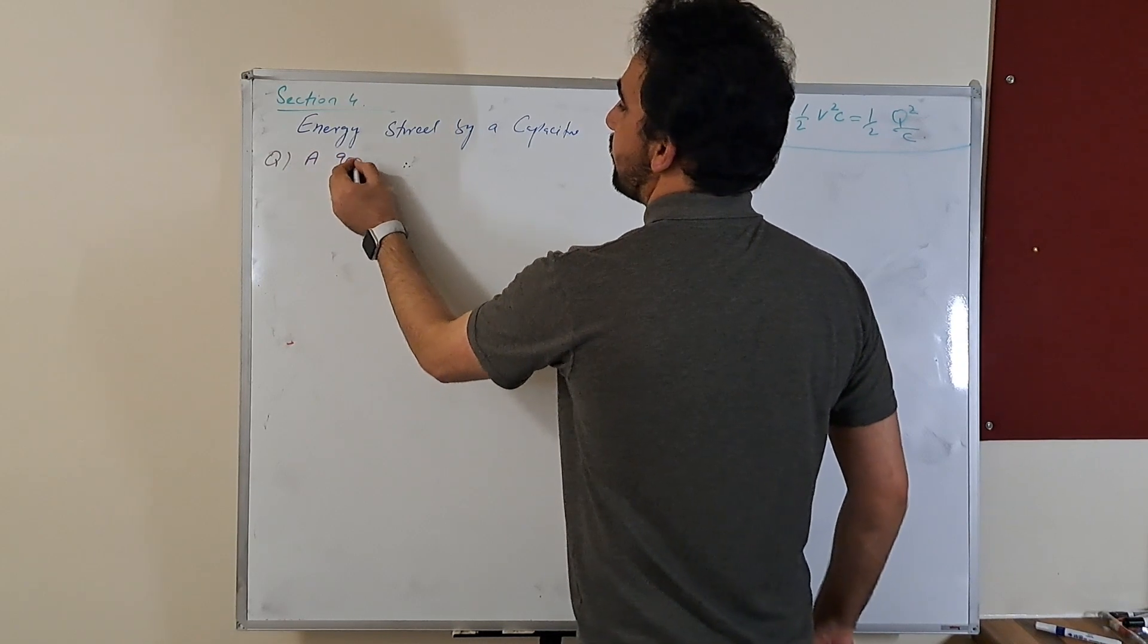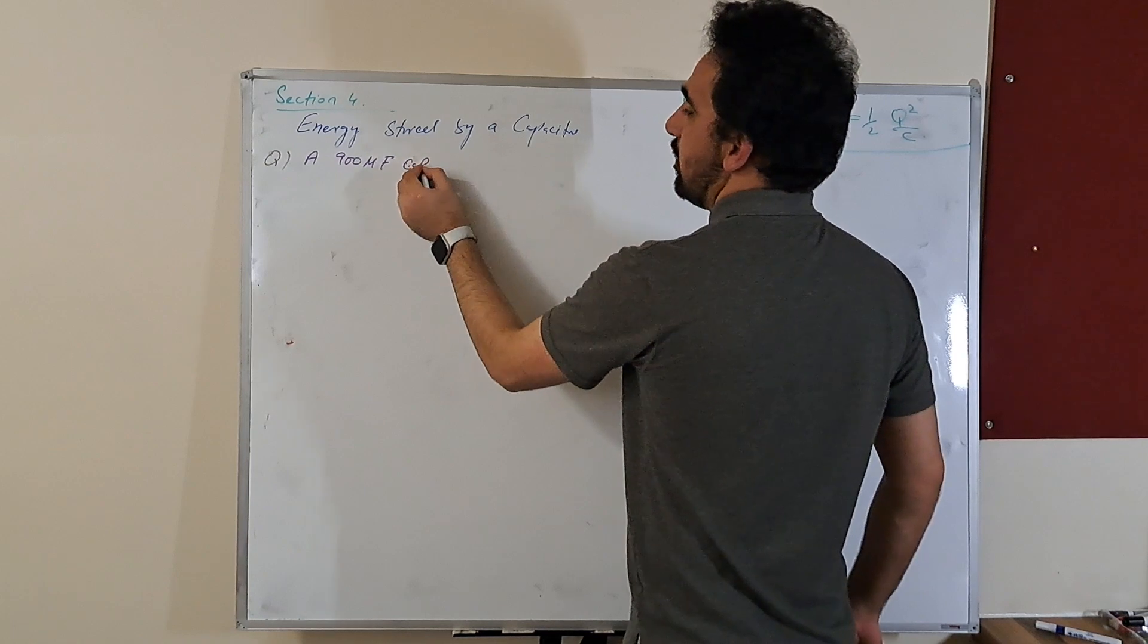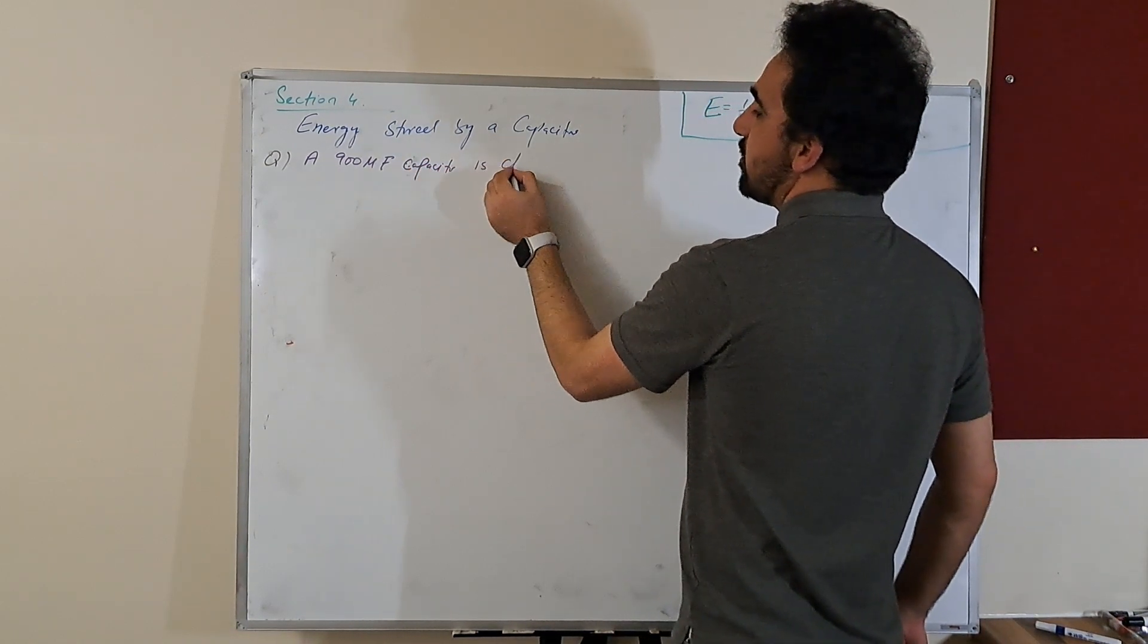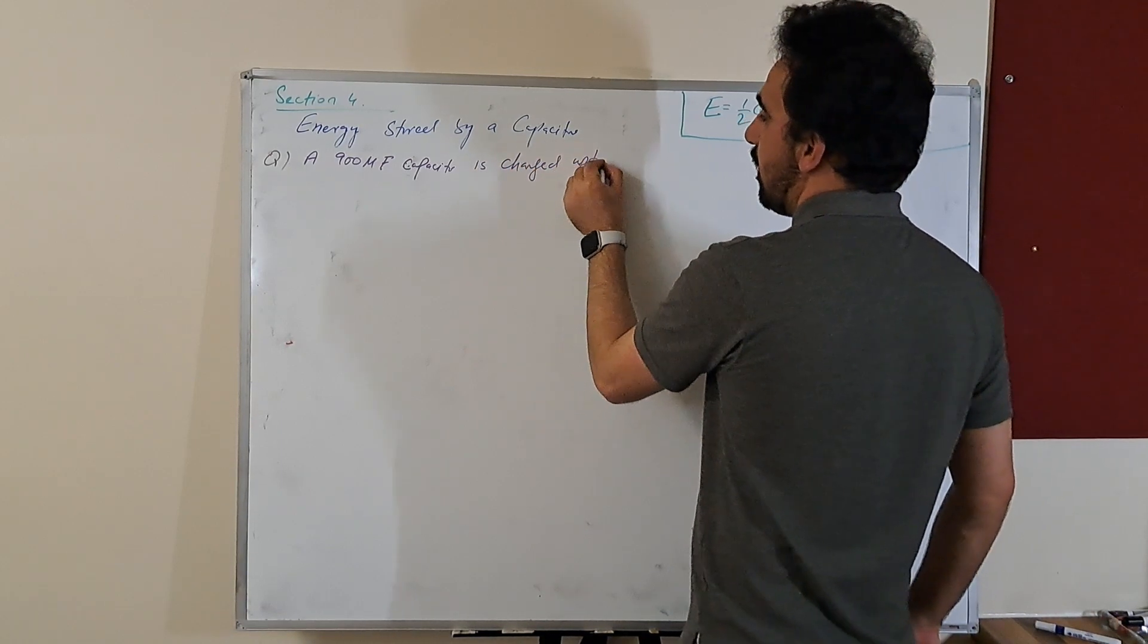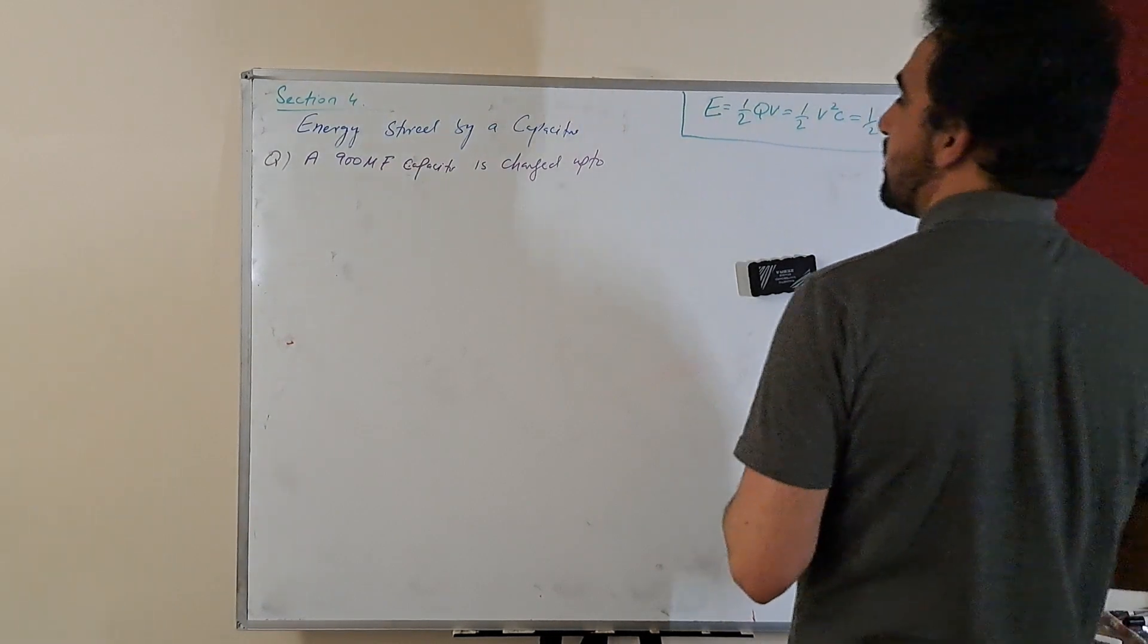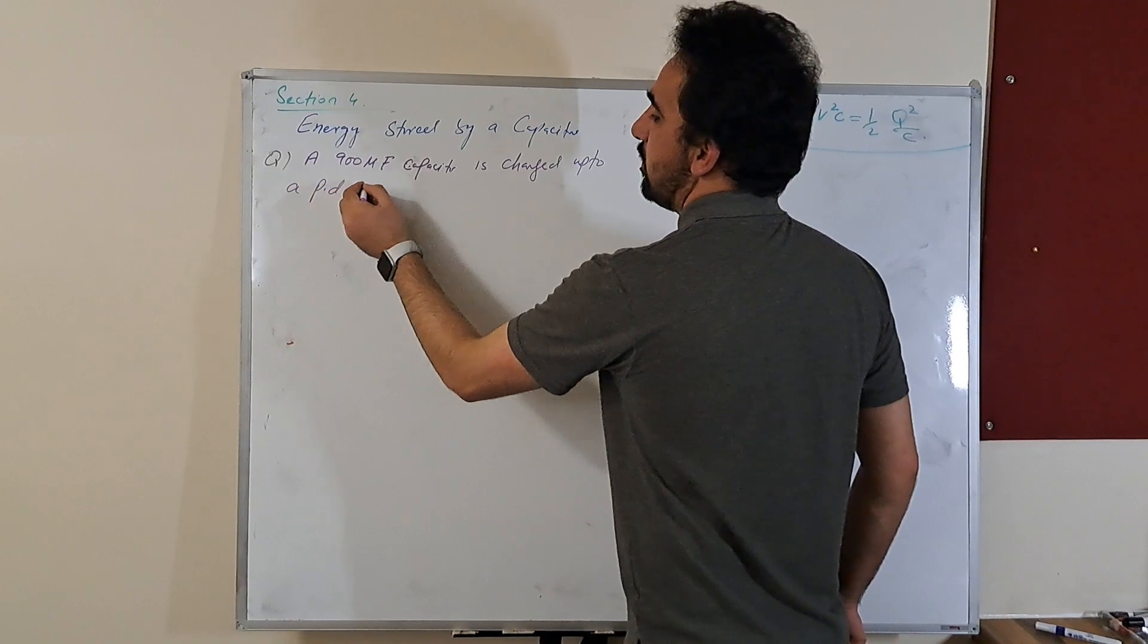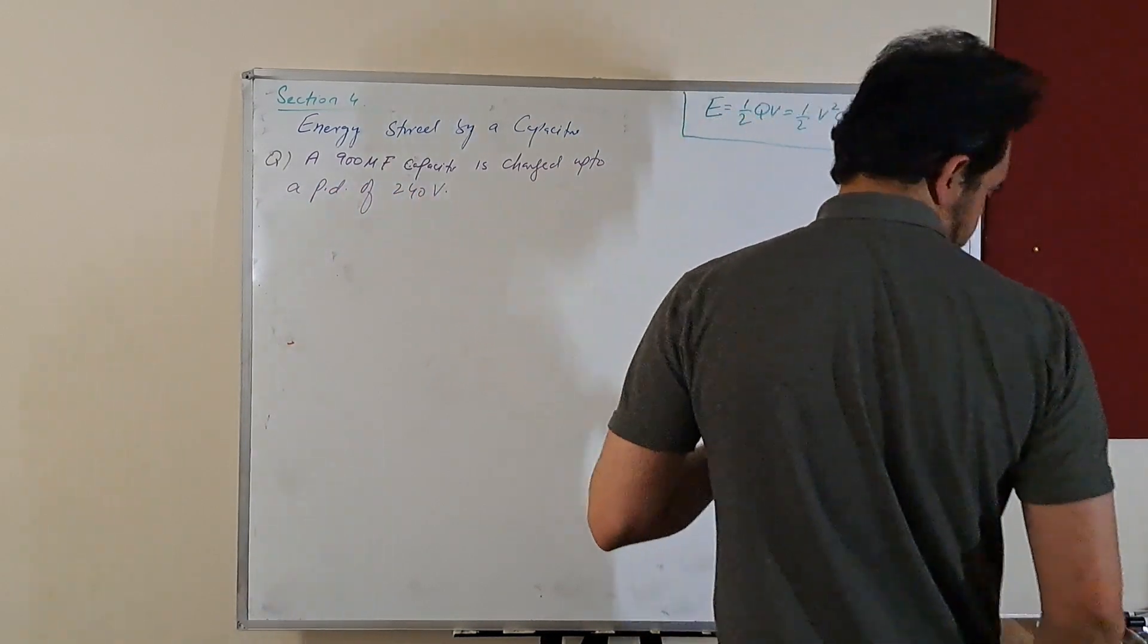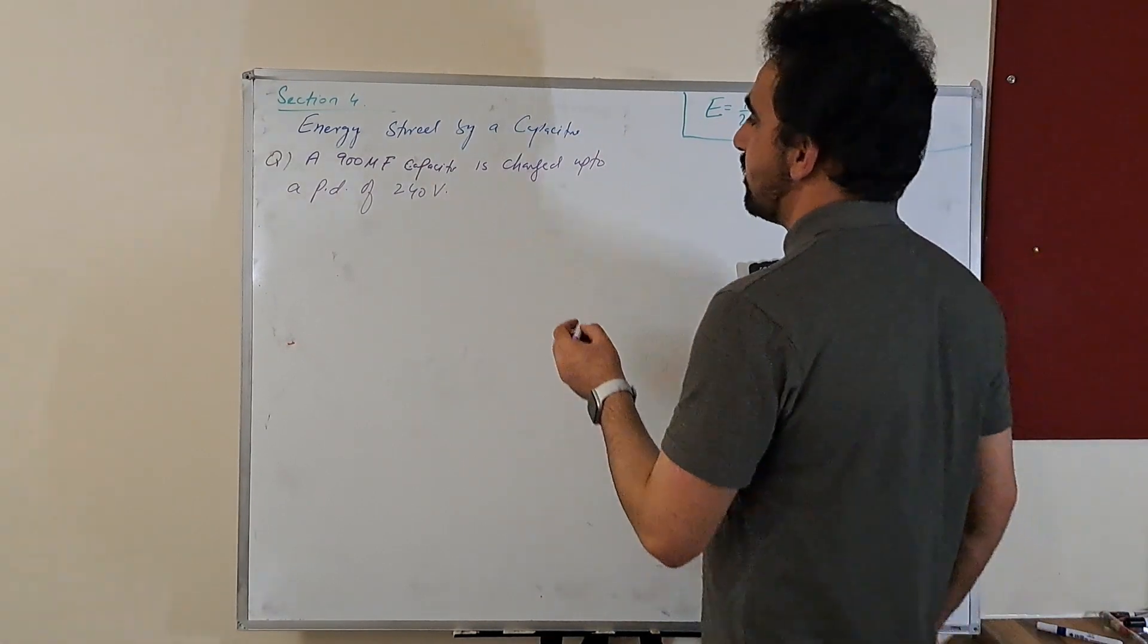A 900 microfarad capacitor is charged up to a potential difference of 240 volts. Calculate energy stored by the capacitor.